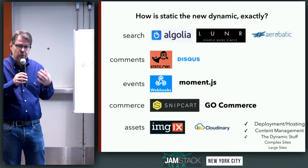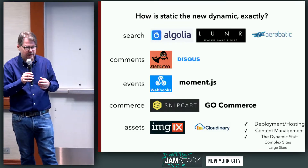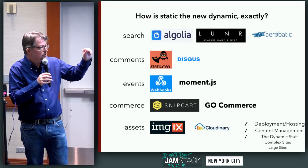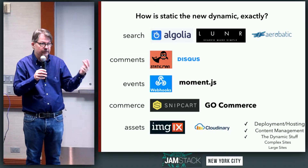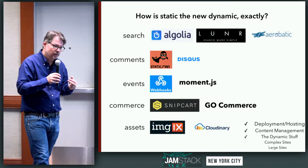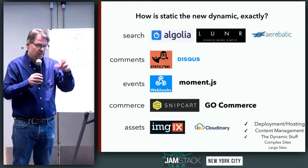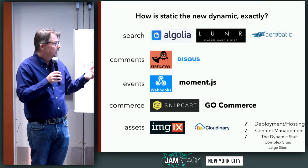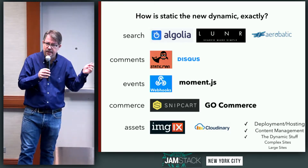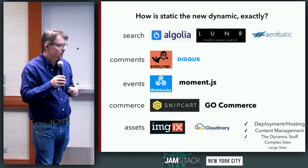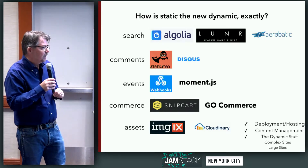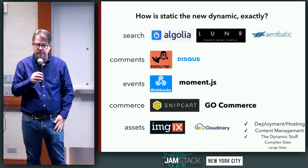A tough nut to crack has been Search. We did a whole meetup on Search about a year and a half ago, and it's a really tough thing to do. Lunr has been around for a long time — it's an open source solution you can build into your site, and it's great. But once you get into a larger site or one with more complex queries, you're going to need something with a backend. You can use a commercial service like Algolia, which is fantastic — super easy to set up, works really well, easy to template search pages. Aerobatic is also offering search as a plug-in service on top of their hosting.